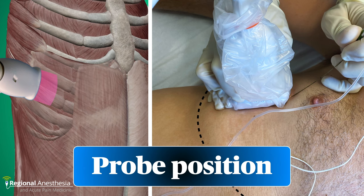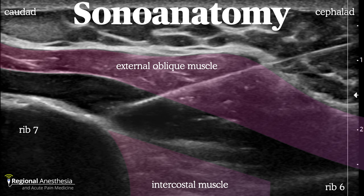To perform this block, a linear probe is placed on the chest wall just medial to the anterior axillary line over the 6th rib, parasagittal in orientation. The needle is advanced from cephalad to caudad. Here's a typical picture with that probe position. We see the 6th and 7th ribs and an intercostal muscle between them. The external oblique muscle is the only structure superficial to the chest wall here, and we see that an injection of local has lifted that muscle up off the ribs.